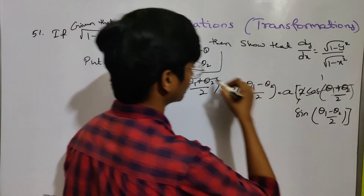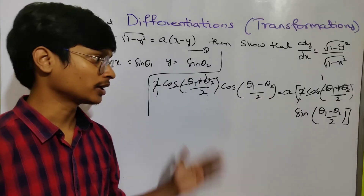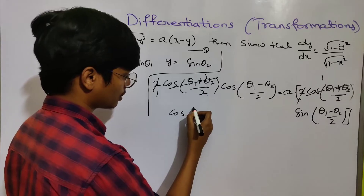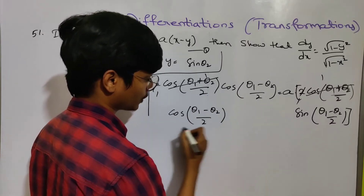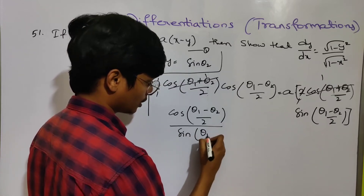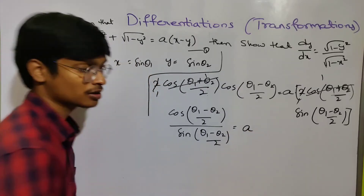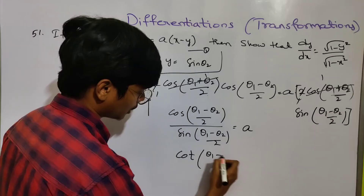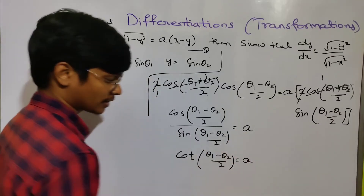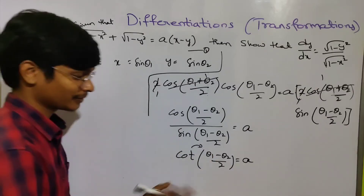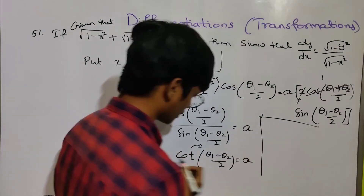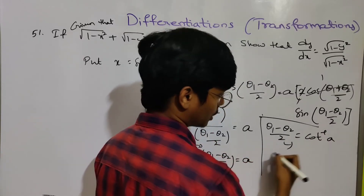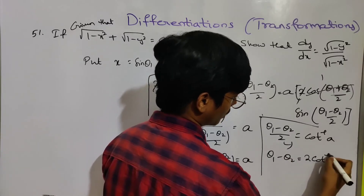The common terms cancel. So cos((θ₁-θ₂)/2) divided by sin((θ₁-θ₂)/2) equals a. This is cos/sin, which equals cot. Therefore (θ₁-θ₂)/2 = cot⁻¹(a), which means θ₁ - θ₂ = 2 cot⁻¹(a).